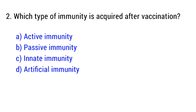Question number 2. Which type of immunity is acquired after vaccination? The right answer is option A: active immunity.